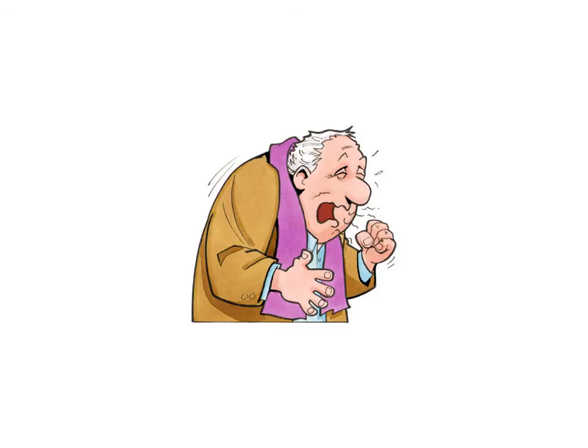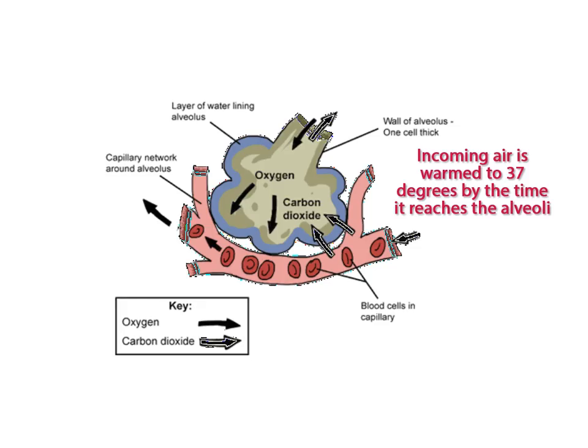Note that the cilia do not act as the filter. The more contact that incoming air has with moist tissues that are 37 degrees Celsius, the closer the temperature of the inhaled air gets to 37 degrees Celsius. By the time air gets to the alveoli, there will be very little difference, if any, in the temperature of the incoming air with that of the surrounding tissues.